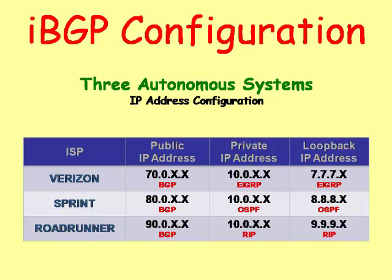IBGP means Internal Border Gateway Protocol, meaning that all the routers within a particular autonomous system can talk to each other. For example, Verizon has the 70.0 network, and the routers in Verizon all use the IBGP protocol. Sprint and Roadrunner are two different autonomous systems, so they use External Border Gateway Protocol, or EBGP.